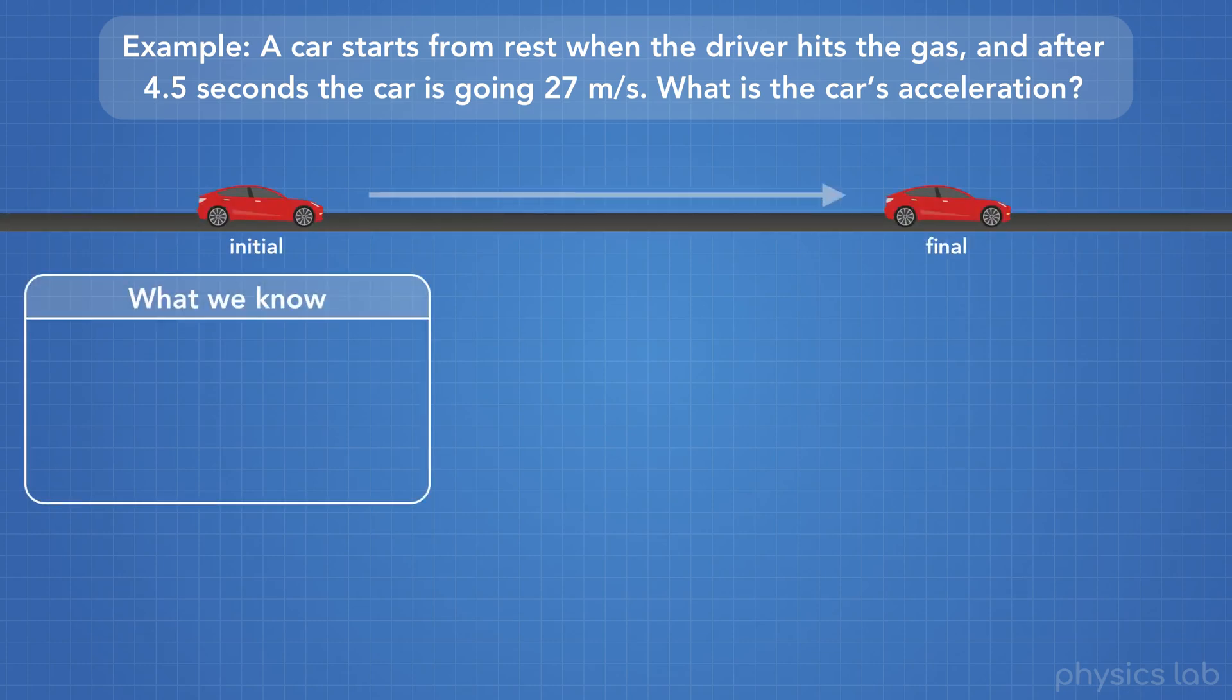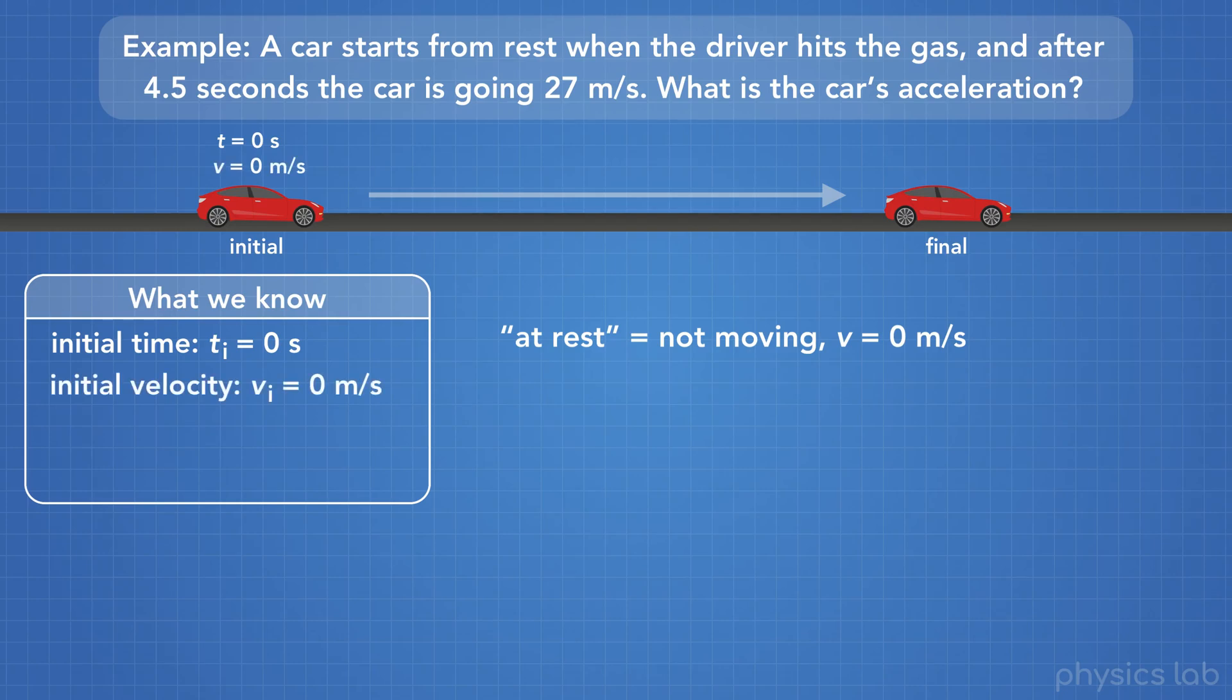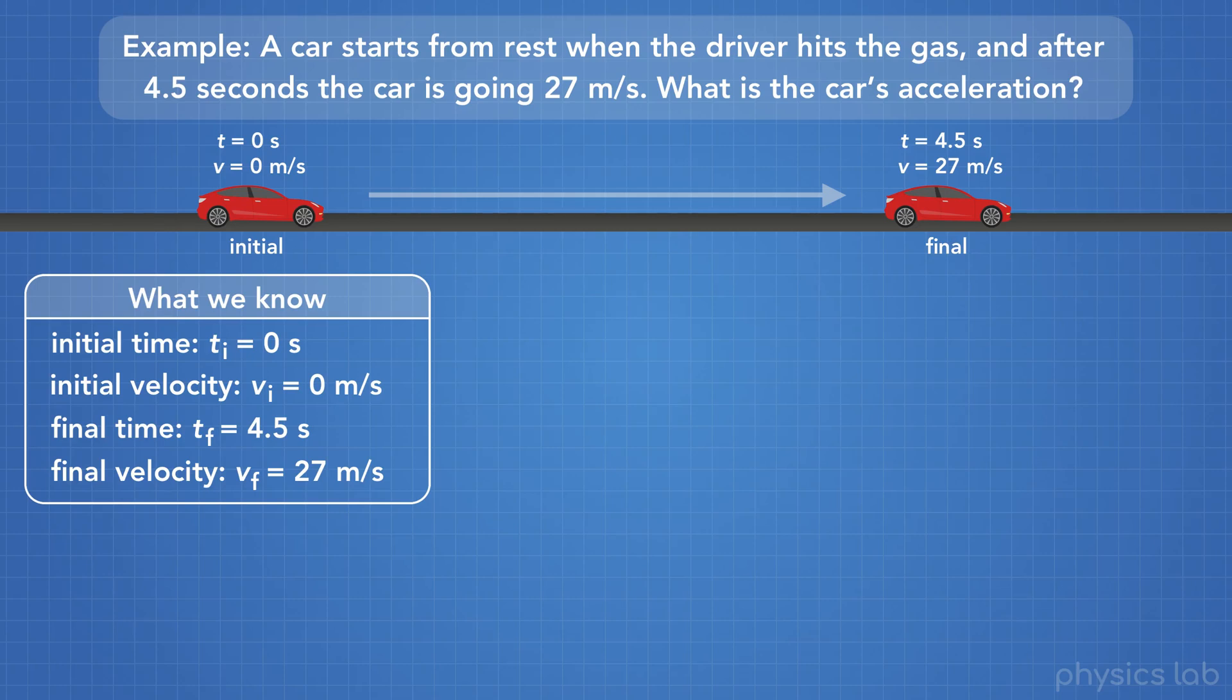Next we need to write down what we know. The problem says that the car starts from rest. In physics, when we say an object is at rest, that means that it's not moving, and therefore its velocity is zero. So we'll say that at the initial point, when no time is passed, that the initial time is zero seconds. And since the car started from rest, the initial velocity is zero meters per second. We also know that at the final point, the final time is 4.5 seconds, and the final velocity is 27 meters per second.